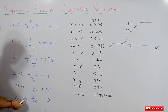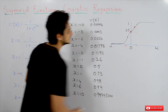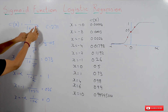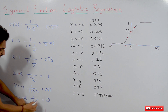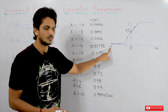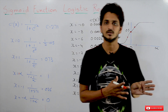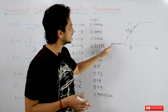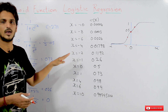As x goes negative, the value reduces. At x equals minus infinity: e to the power of minus of minus infinity is e to the power plus infinity, which is infinity. So 1 divided by 1 plus infinity equals 1 divided by infinity, which equals 0. At x equals minus infinity, we get a value of 0. So the minimum value is 0 and the maximum value is 1. The sigmoid function looks like the shape of an S.